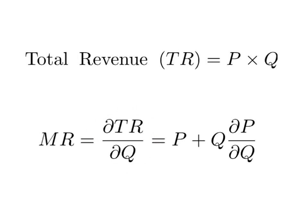Using the chain rule from calculus, the derivative of P times Q is given by P times the derivative of Q with regards to Q — which is just 1 — plus Q times the derivative of P with regards to Q. So marginal revenue equals P plus Q times dP/dQ.